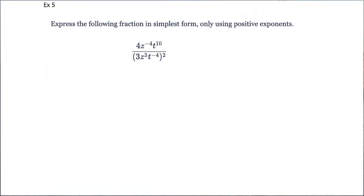Okay. Let's take a look at this next one. Got a couple more variables in there. Doesn't really change what we do on this. So, this is 4z to the negative 4, t to the 10th, divided by 3 squared, z to the 6th, t to the negative 8.